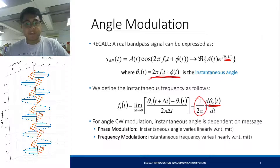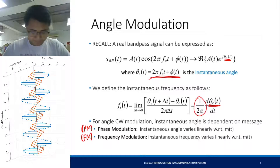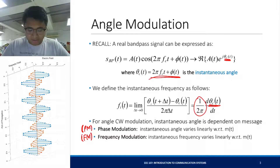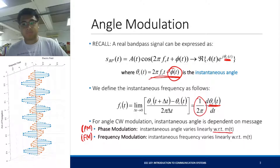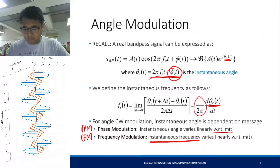Phase modulation or PM and frequency modulation or FM — and I'm sure you've heard FM a lot. For phase modulation, your instantaneous angle φ(t) varies linearly with respect to the message m(t). For frequency modulation, your instantaneous frequency varies linearly with respect to m(t).